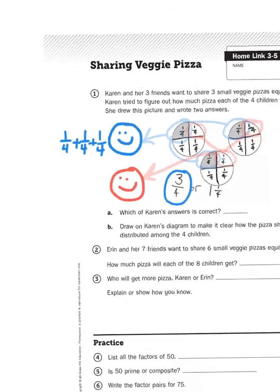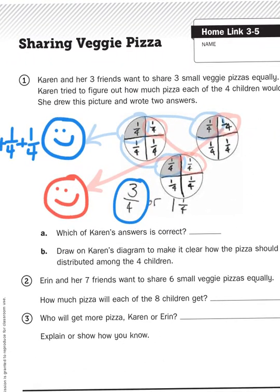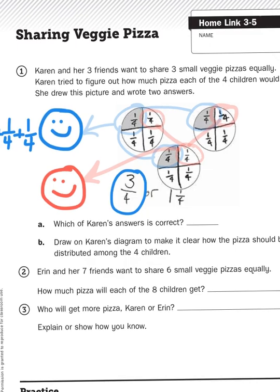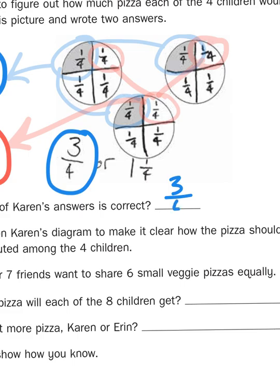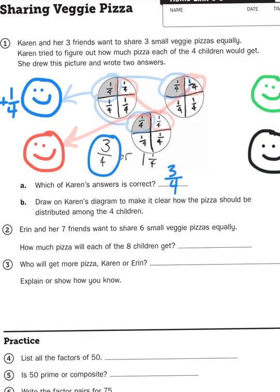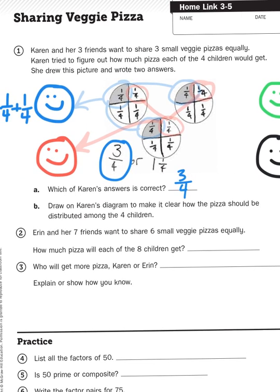And her second friend, in red, also got one, two, three-fourths. Added together would give you three-fourths. So, the correct answer is three-fourths, because as you distribute, as you hand out slices of pizza, each person would get three out of the total four slices from each pizza.